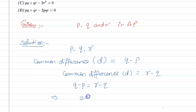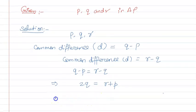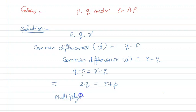So, Q plus Q that is 2Q is equal to R plus P. So, now we will multiply by Q.